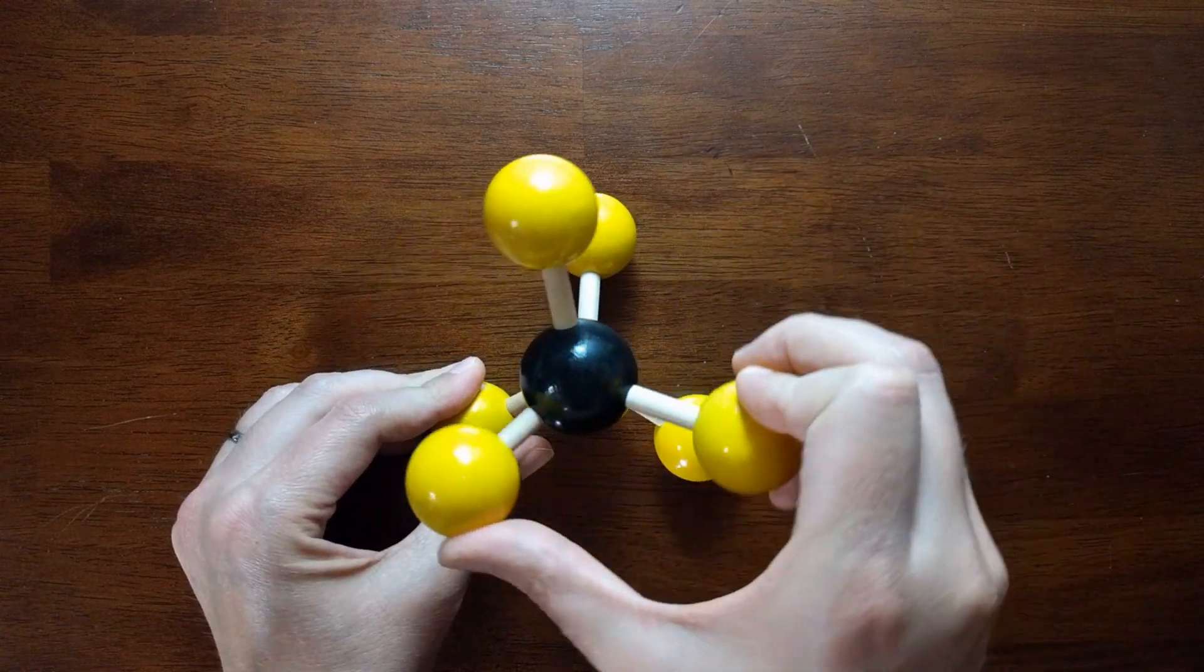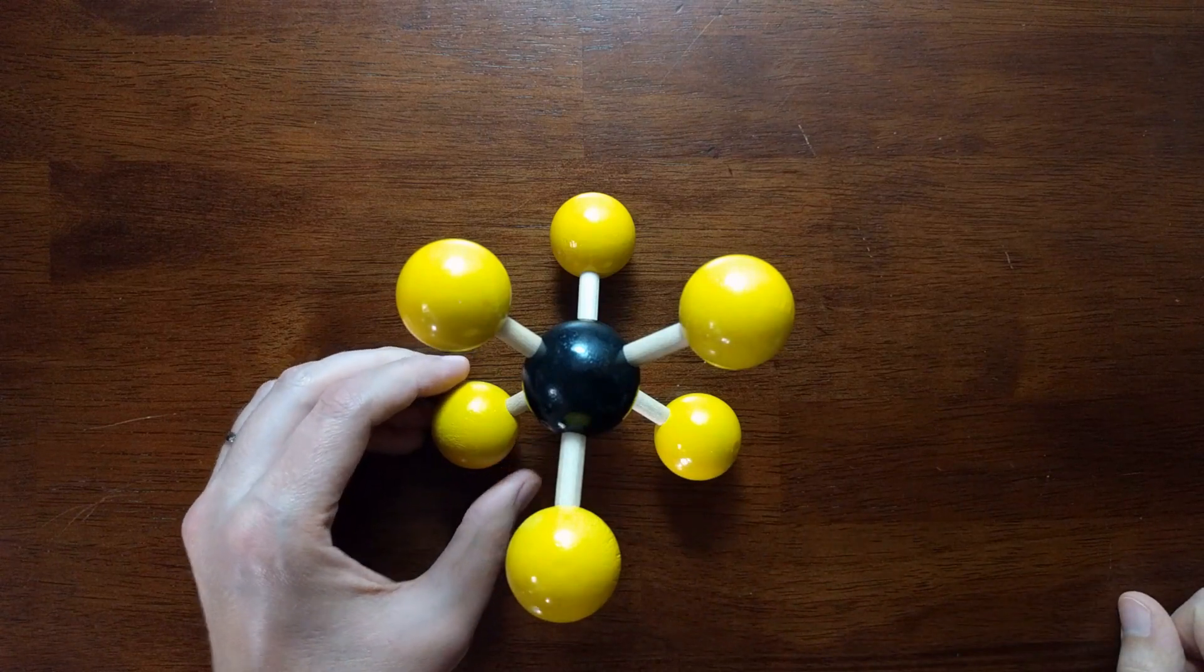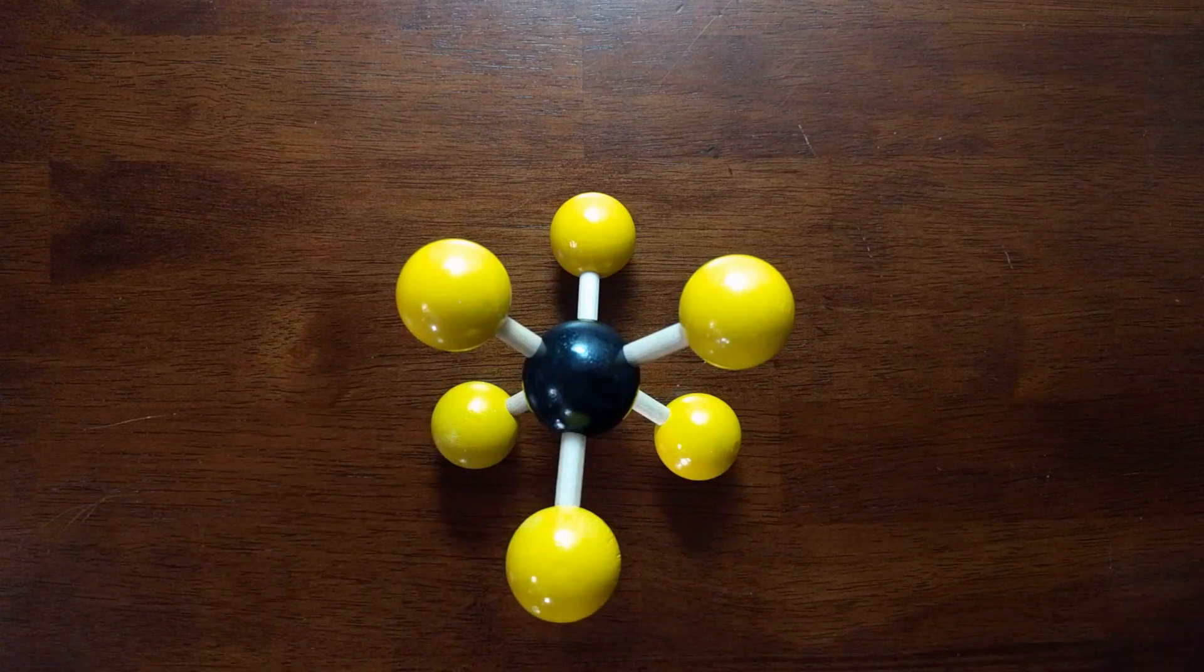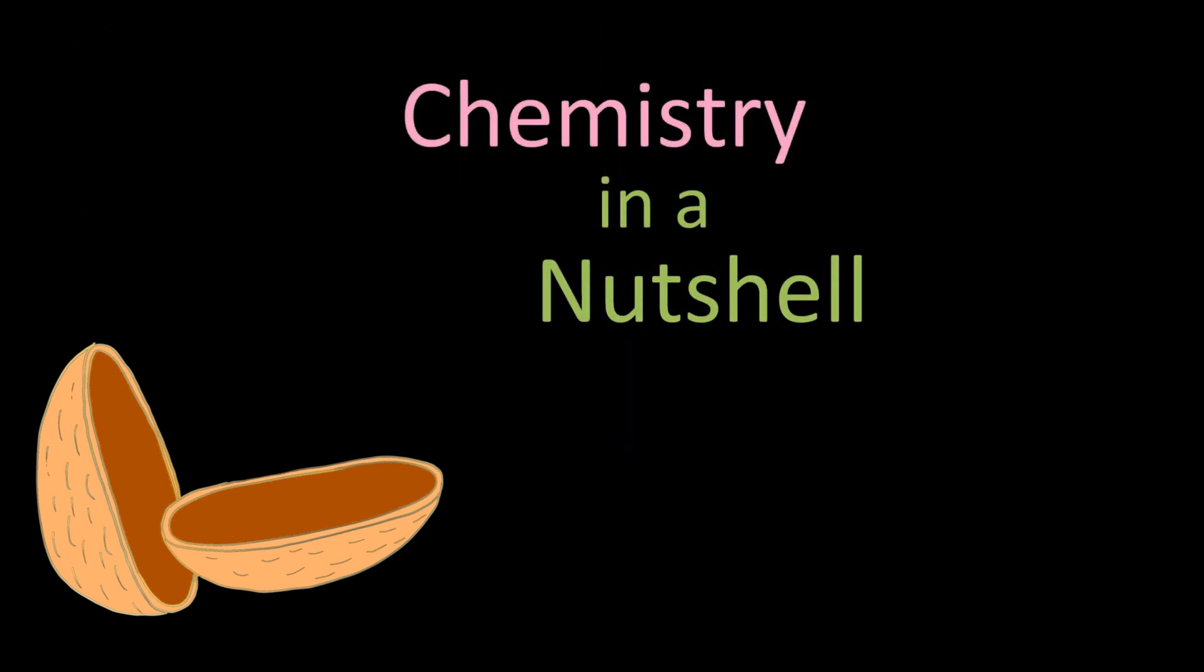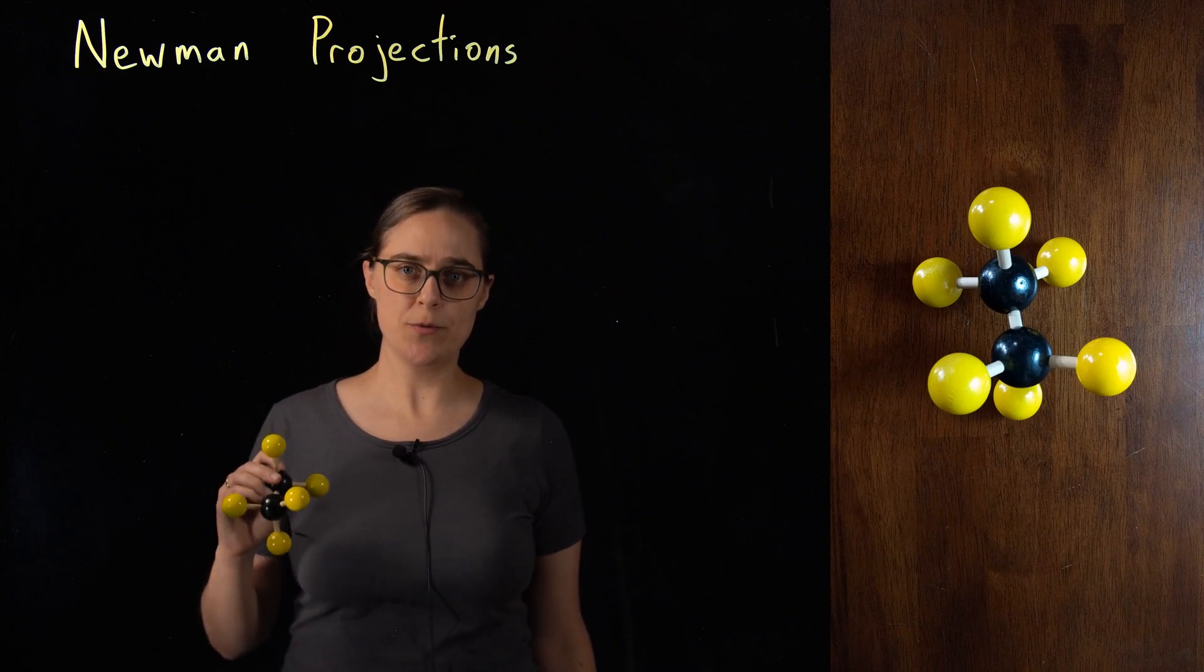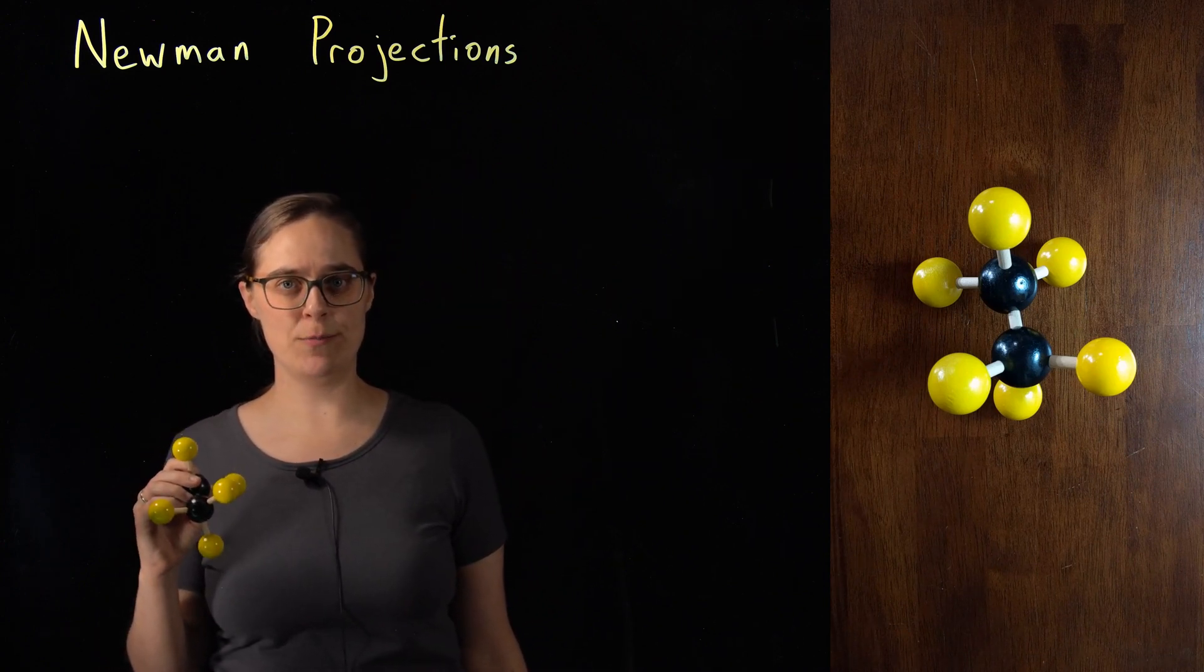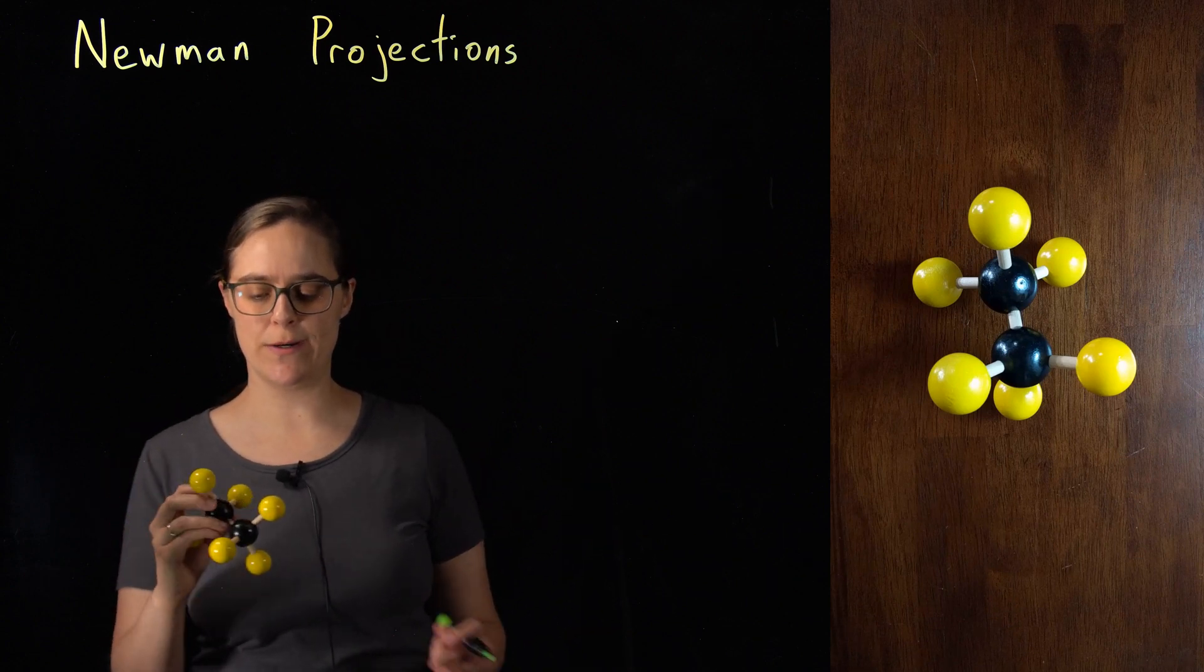You can also clearly see anything in between. This is the orientation in which Newman projections are drawn. There are a lot of different methods for drawing molecules, and Newman projections are used when you want to very clearly show the conformation around a particular bond.